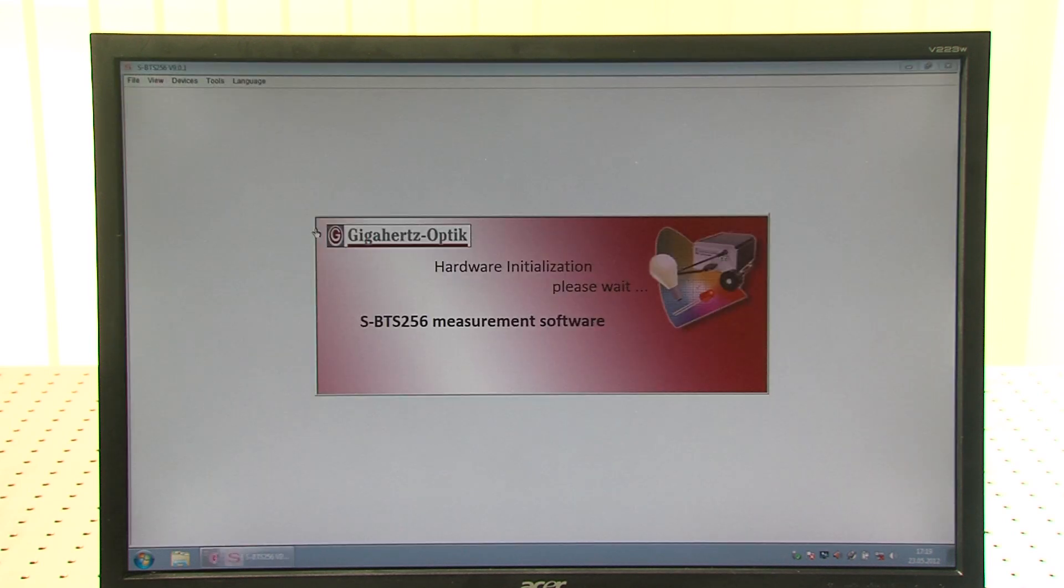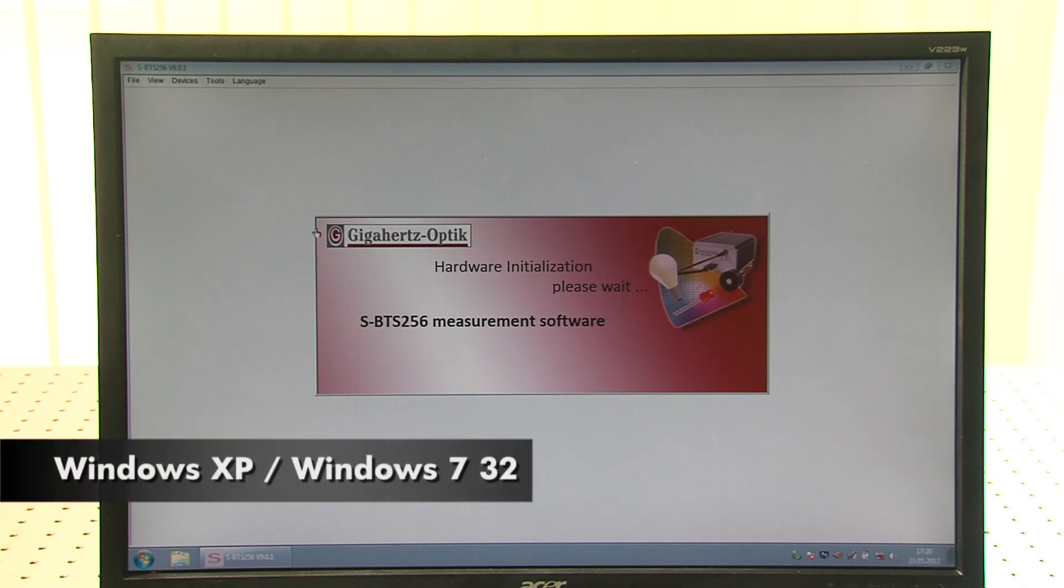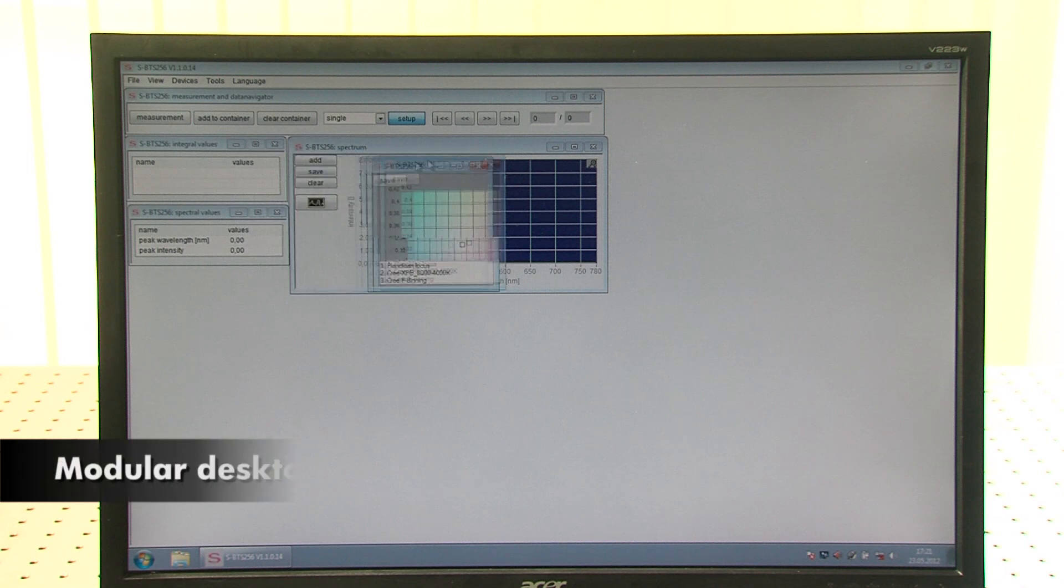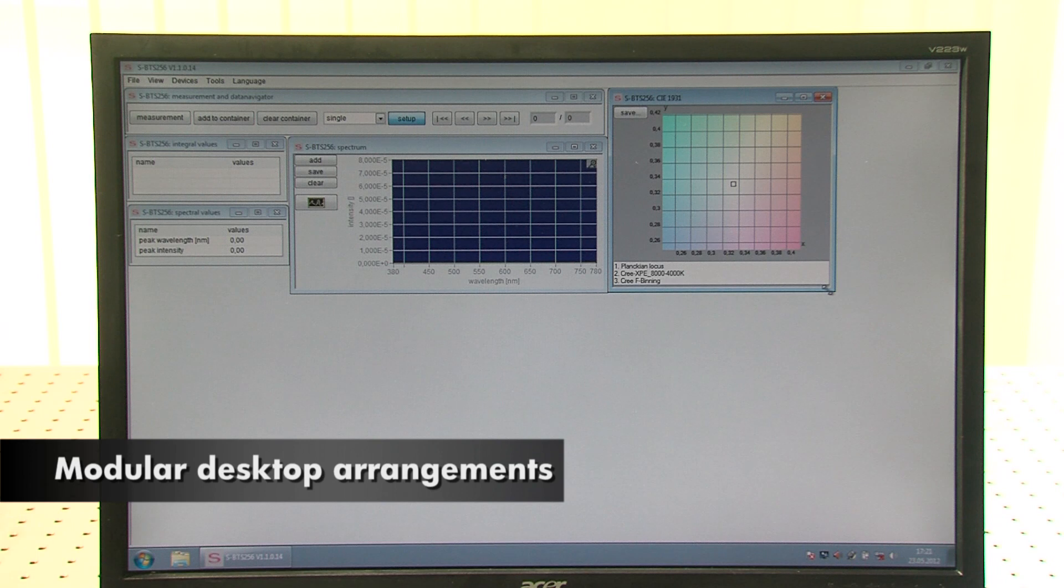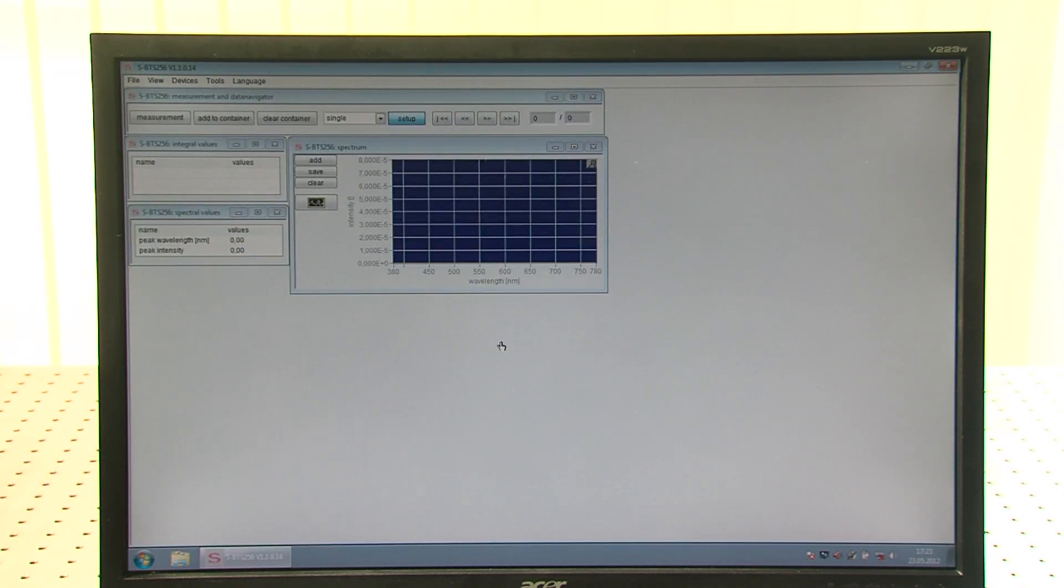The software SBTS supplied with the LED Tester supports Windows XP and Windows 7 32-bit. Measurement windows can be selected and arranged on the desktop using the software. Once arranged, a desktop layout can be stored for reactivation as required.